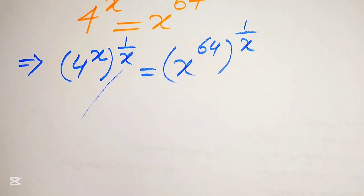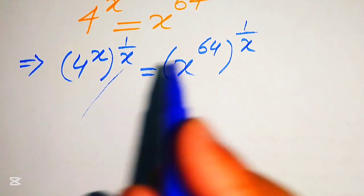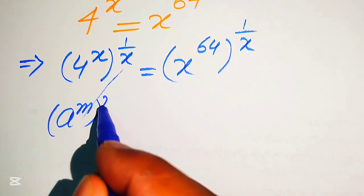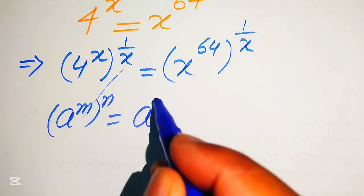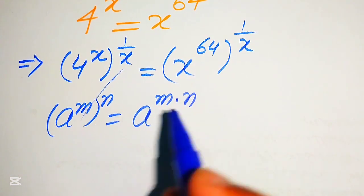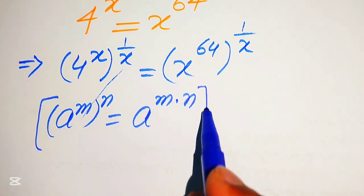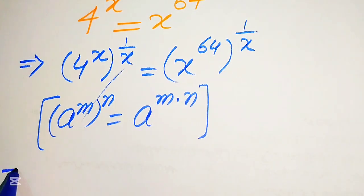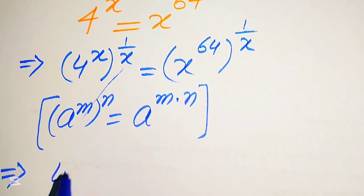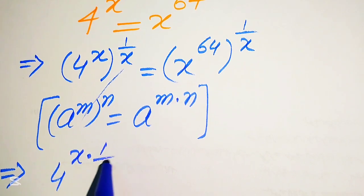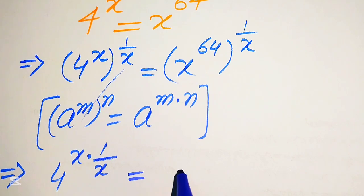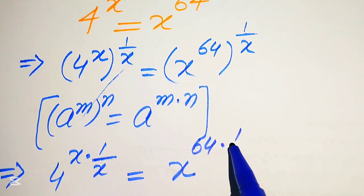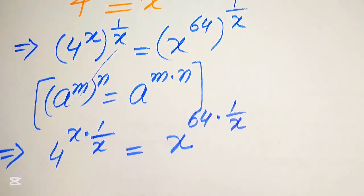In the next step we need more simplification. We know the exponent law: a to the power of m to the power of n equals to a to the power of m multiplied by n. According to this law, we multiply the exponents, giving us 4 to the power of x multiplied by 1 over x, equals to x to the power of 64 multiplied by 1 over x.